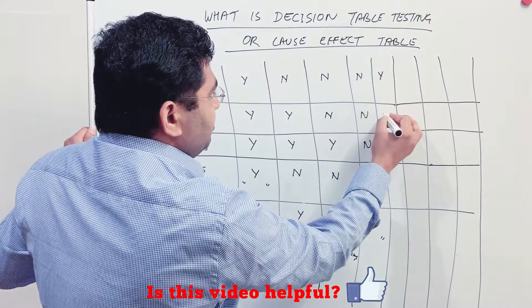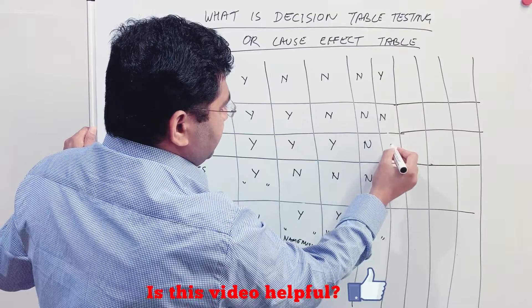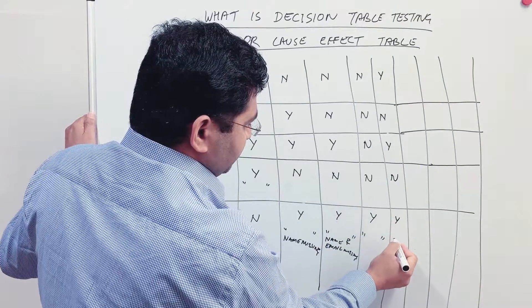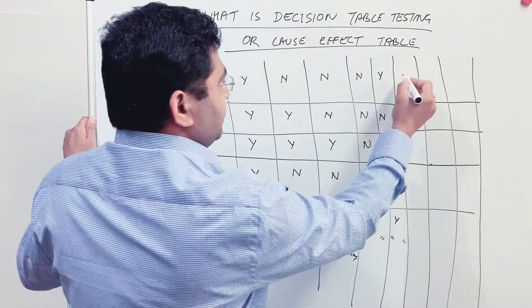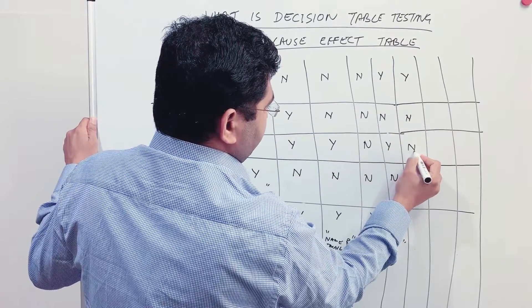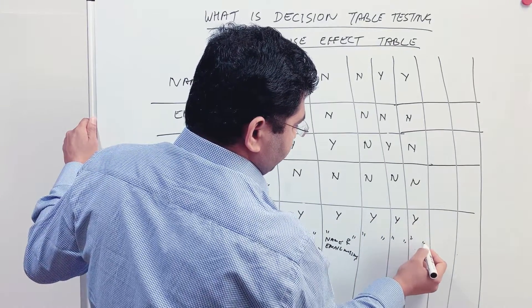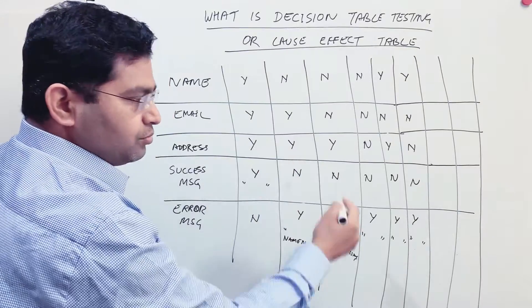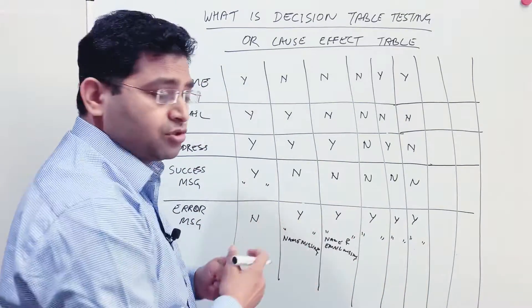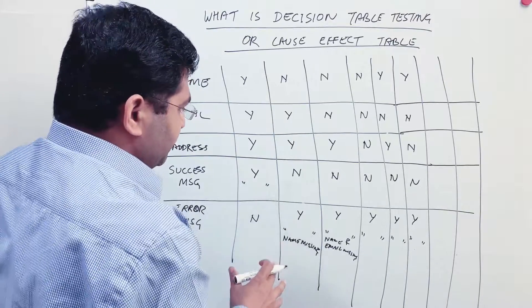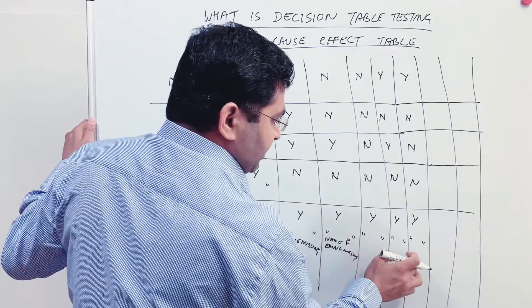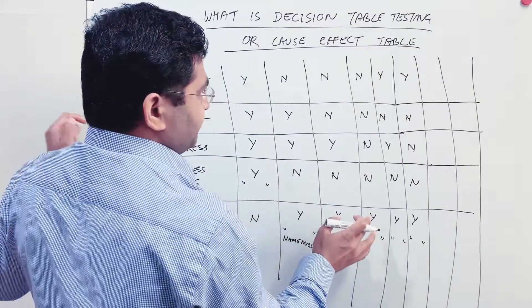Similarly, if name is present, email is not there, and address is there — no success message, error message: Yes, and the error message displayed is 'Email missing.' Then if name is present, email is not present, and address is not present — no success message, error message displayed. You just continue this process until you have covered all the different error messages that need to be displayed to the customer. You put the specific error message in each case.